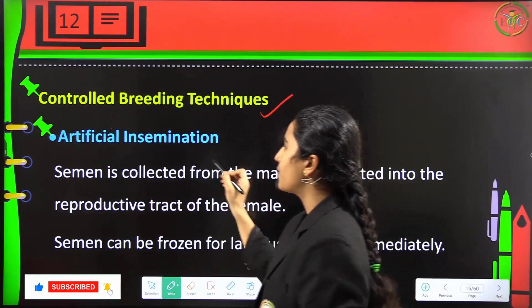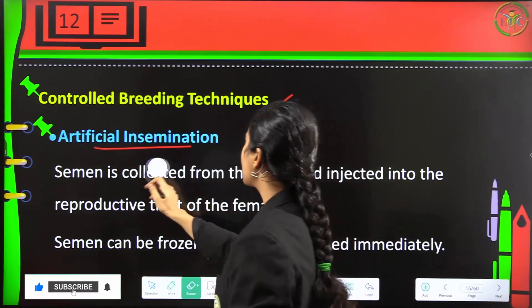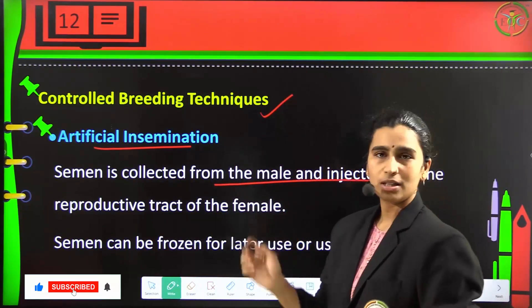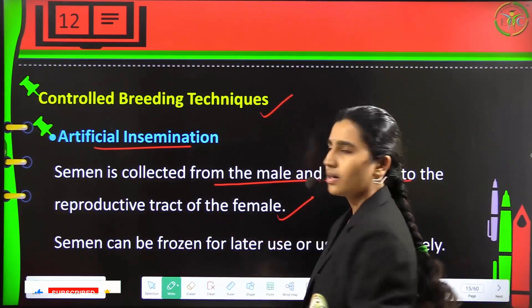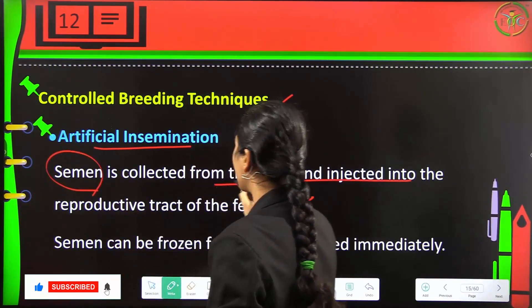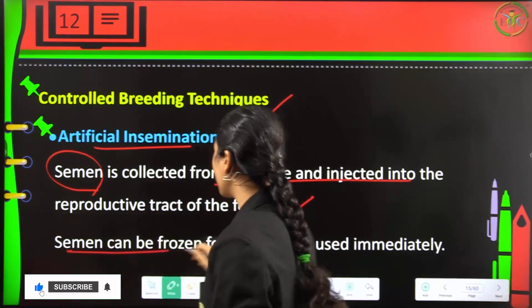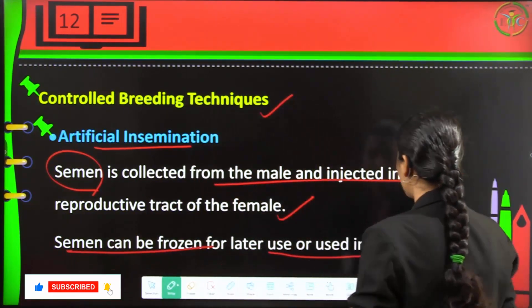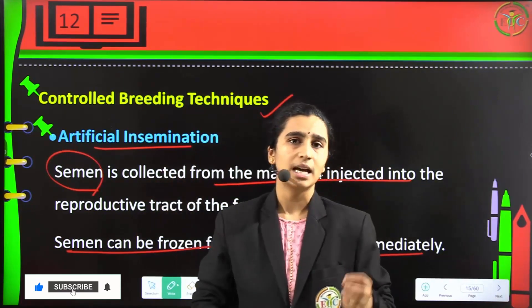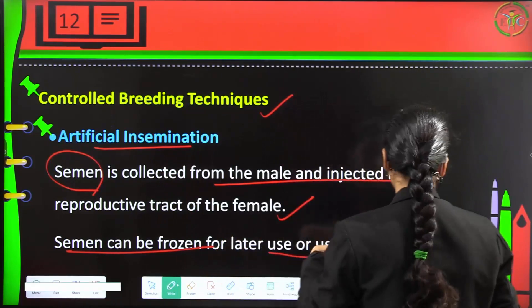Controlled breeding techniques include artificial insemination, where the semen is collected from the male and injected into the reproductive tract of the female. The semen collected can be frozen for later use or used immediately.